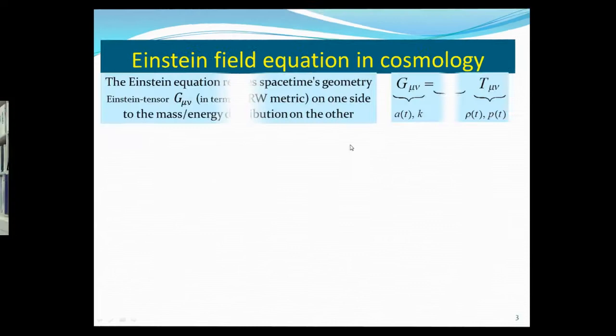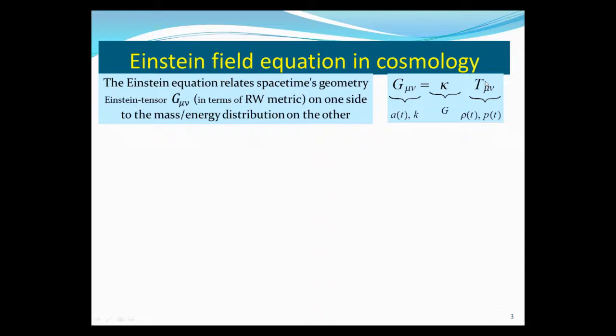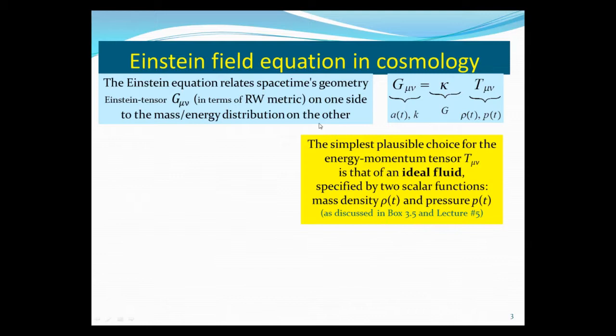The Einstein equation relates spacetime geometry—here's the Einstein tensor, which is, remember, the second derivative of the metric—and it's related to T_μν, which is the energy-momentum tensor. And the simplest possible choice for T_μν is that it's an ideal fluid specified by two scalar functions: the mass density ρ(t) and pressure p(t). We talked about this in the book in Box 3.5 and in Lecture 5.